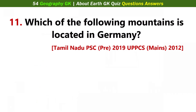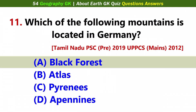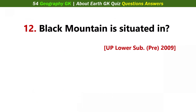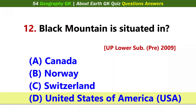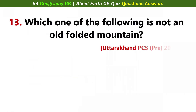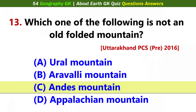Which of the following mountains is located in Germany? Answer A: Black Forest. Black Mountain is situated in... Answer D: United States of America. Which one of the following is not an old folded mountain? Answer C: Andes Mountain.